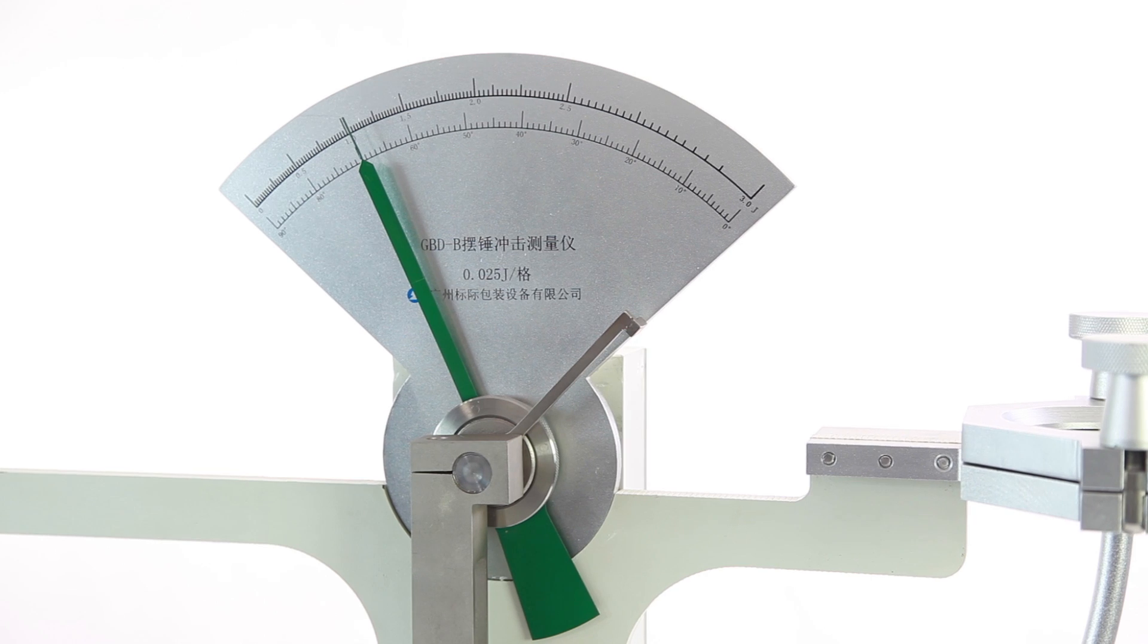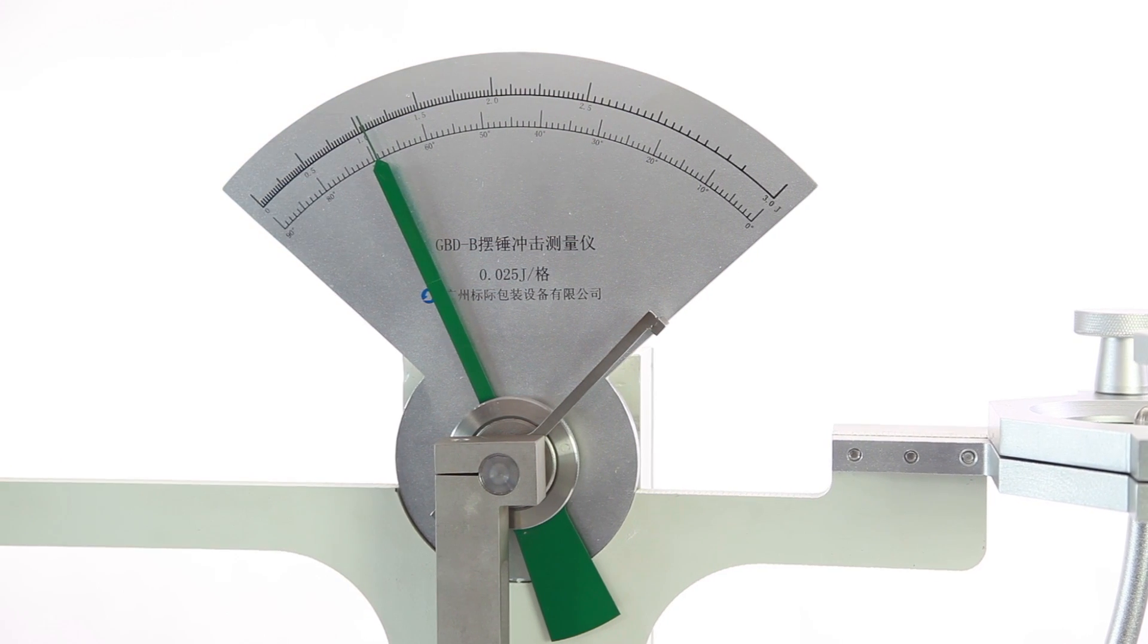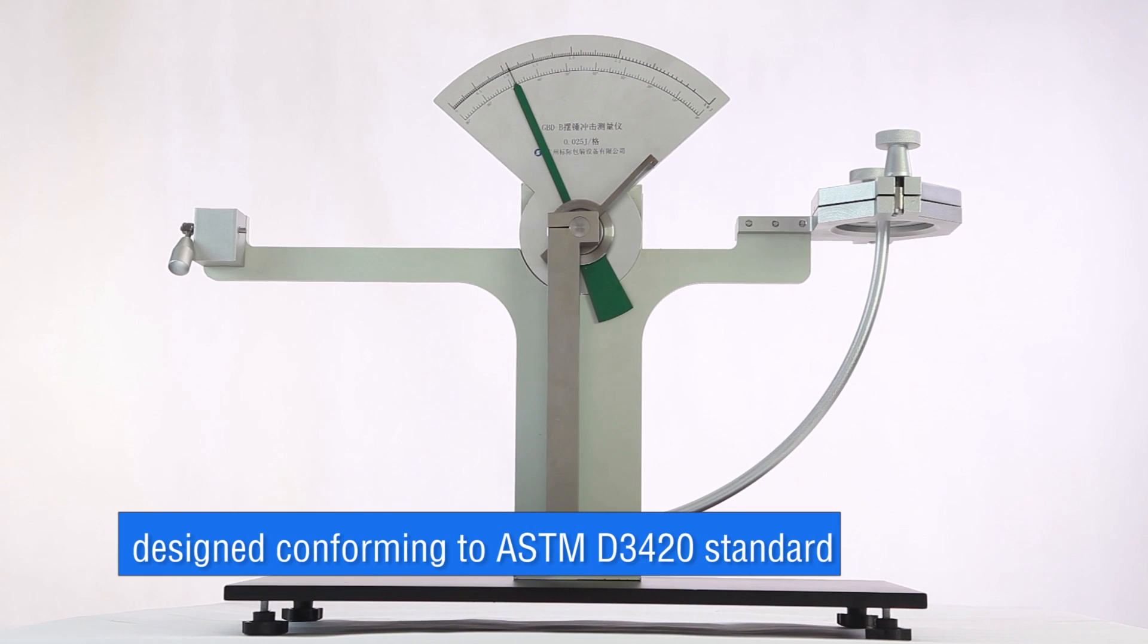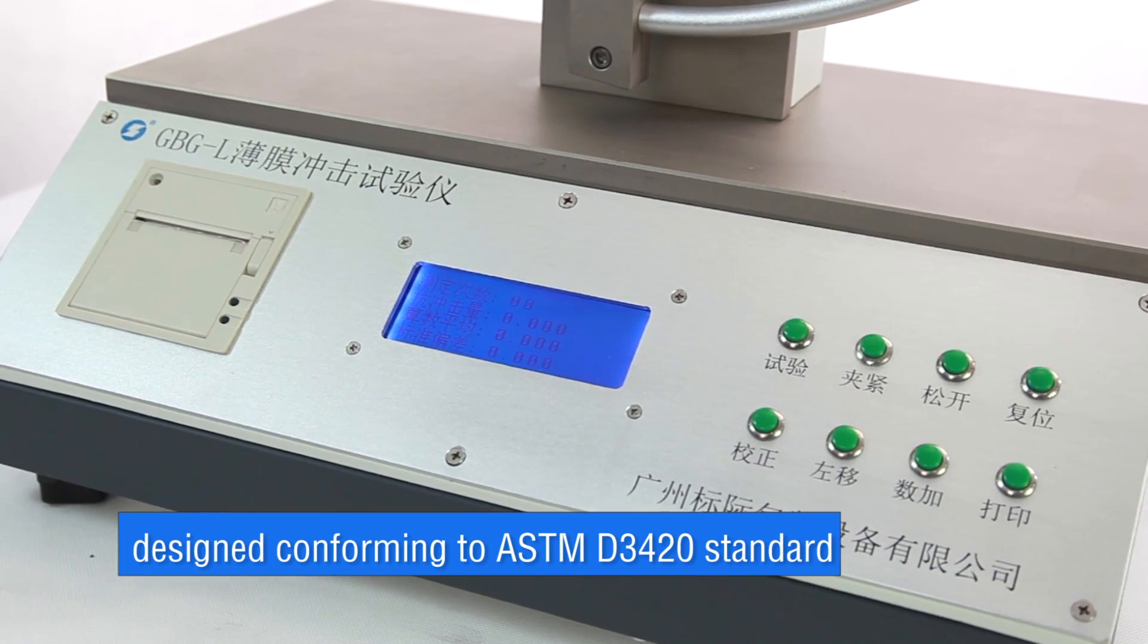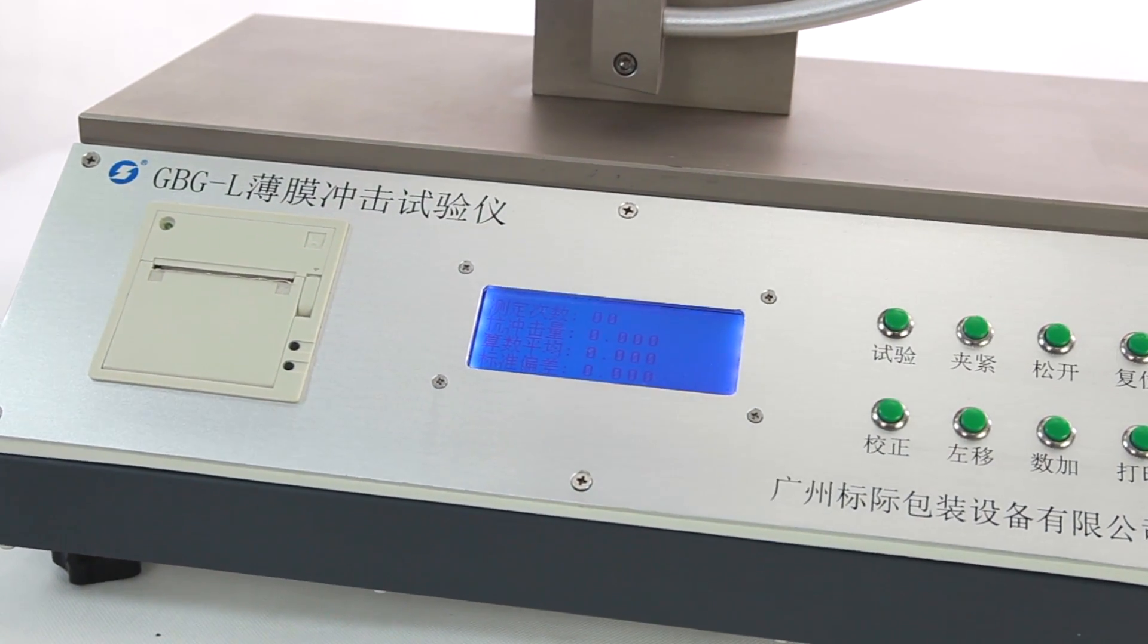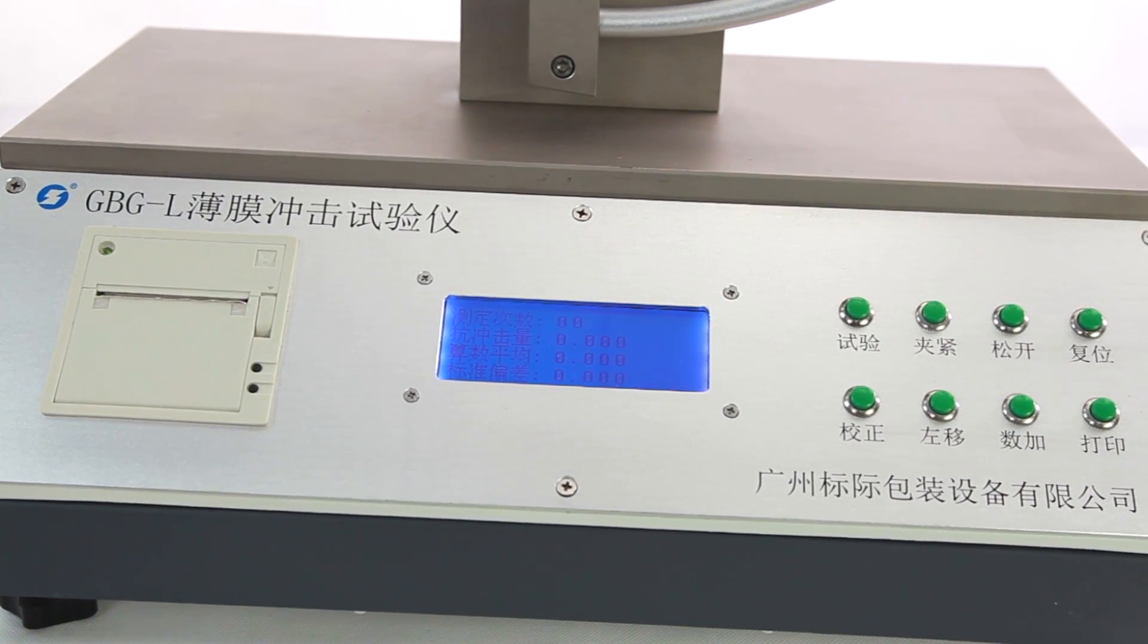GPGL and GPDB Pentelon impactor testers are designed conforming to ASTM D3420 standard, used to test the impact resistance of plastic film, metallic foil, and so on.